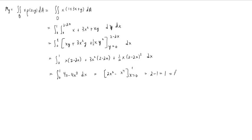At this point we can write down the center of mass in the x direction. Remember, x-bar is M_y over the mass m. So x-bar equals 1 over (8/3), which gives us 3/8. That's the x coordinate of our center of mass.